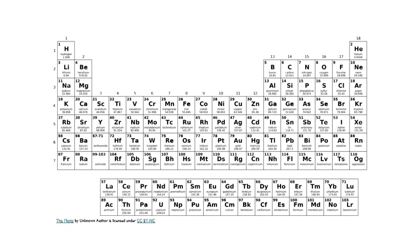For strong acids, the list is: HCl, HBr, HI, HNO₃, H₂SO₄, and HClO₄. If an acid is not on this list, it is a weak acid. For strong bases, look at Group 1 and Group 2 hydroxides: lithium, sodium, potassium, rubidium, cesium, francium hydroxides, and calcium, strontium, barium, radium hydroxides. If a base is not in these groups, it is a weak base.